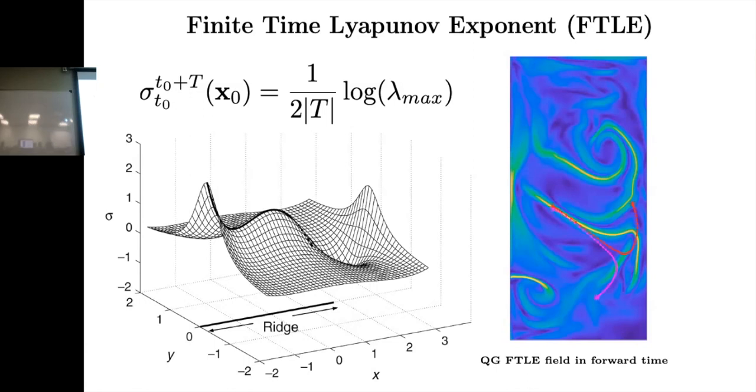We're trying to get ridges of the FTLE field. Instead of think of these colors as a height function, we're trying to get a ridge of the height function. That becomes computationally one of the most difficult things to do, but it's more of a computer science problem or computer imaging. So that's for the steady double gyre.